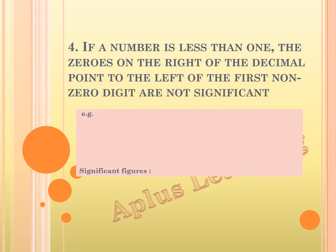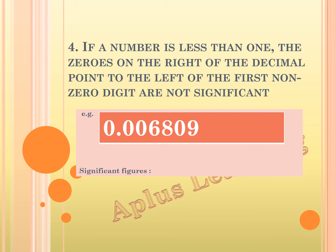The next rule: if a number is less than 1, the zeros on the right of the decimal point to the left of the first non-zero digit are not significant. Let's take the number 0.006809. We have 3 zeros to the left of the first non-zero number, which is 6. These zeros are not to be counted while writing the significant figure, so here we get the significant figure as 4.